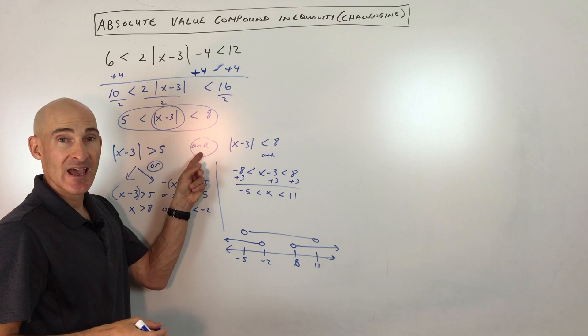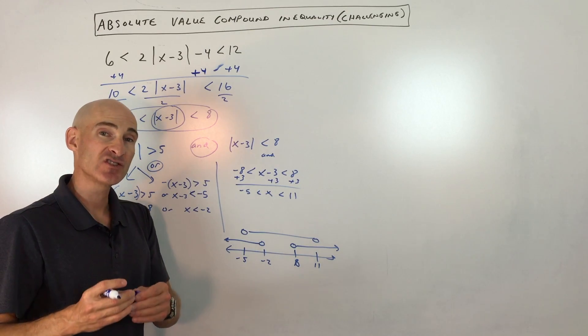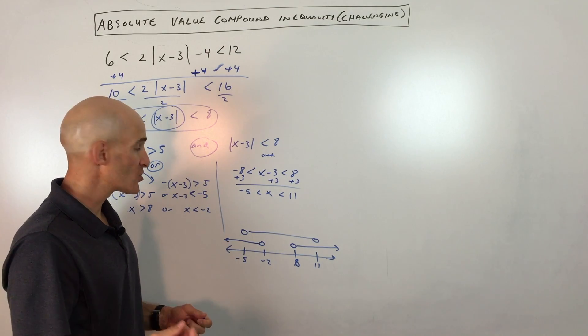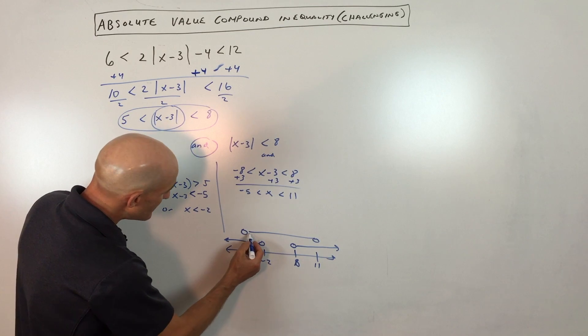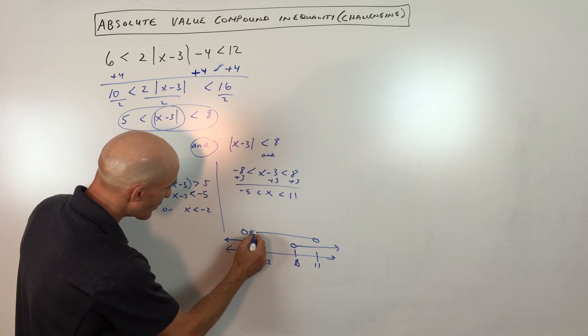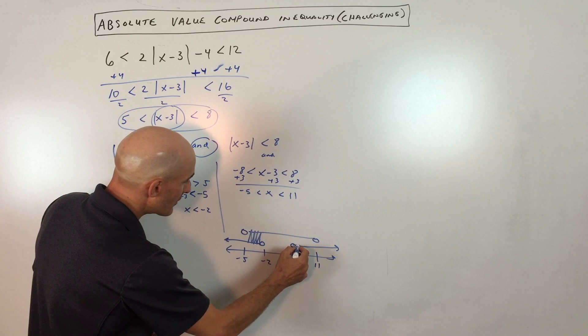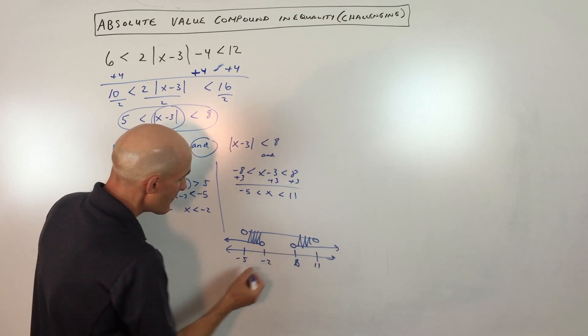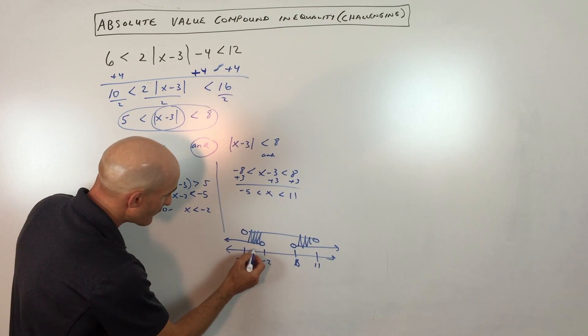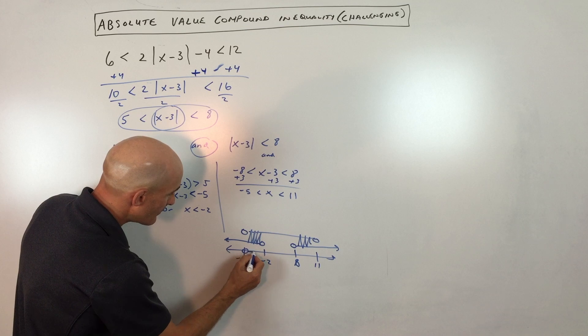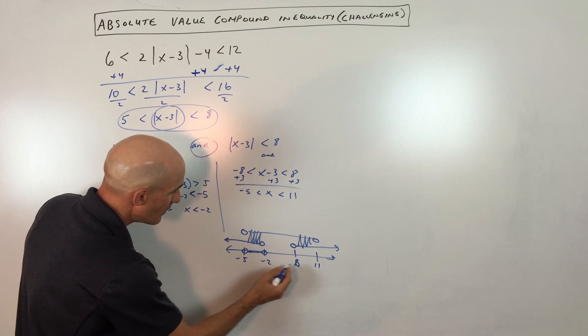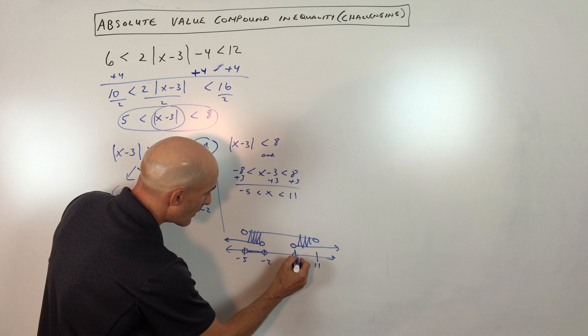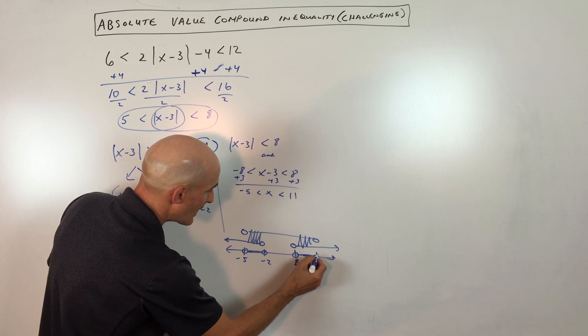But I want you to notice it, see how this is and? When you see the word and, that means intersection, or where the solution sets overlap. And you can see that they're overlapping right here and right here. So our final answer is going to be from negative 5 to negative 2, and then also this region here from 8 to 11.